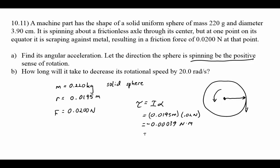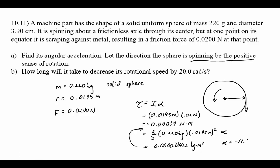Computing the moment of inertia gives approximately 0.0001334 kilogram meters squared. Setting the torque equal to I alpha and solving gives alpha equal to negative 11.7 radians per second squared.